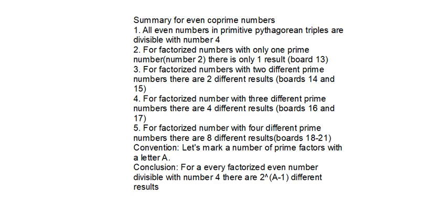Let's look at the convention to make a conclusion. Let's mark the number of prime factors with a letter A. And here is the conclusion: for every factorized even number divisible by number 4, there are 2 to the power of A minus 1 different results. I have shown in previous videos these facts...